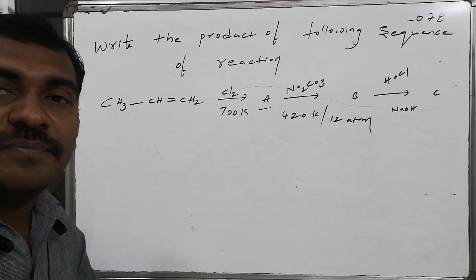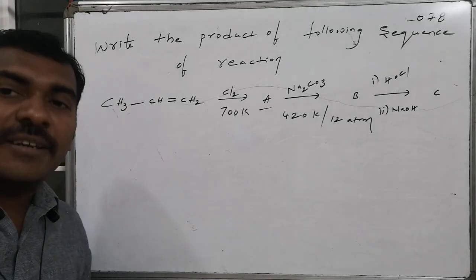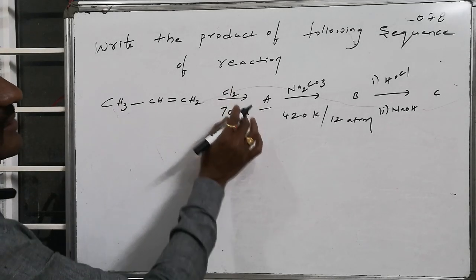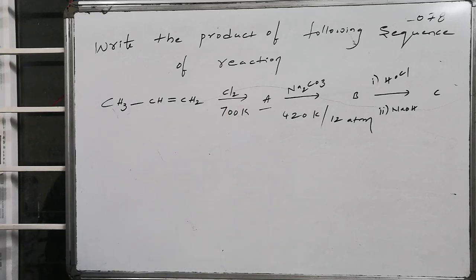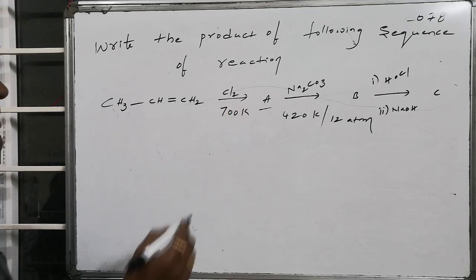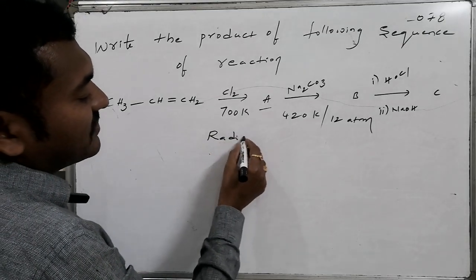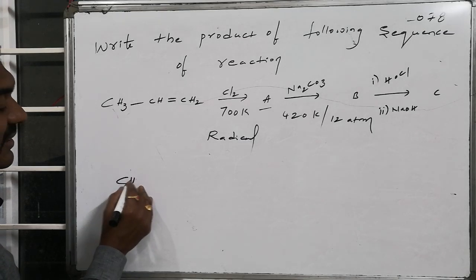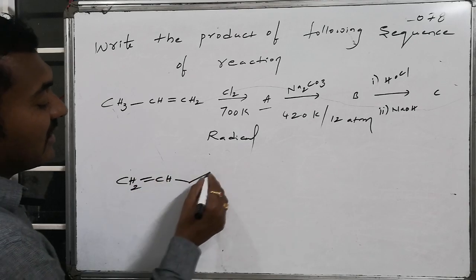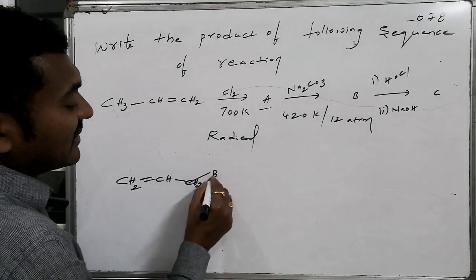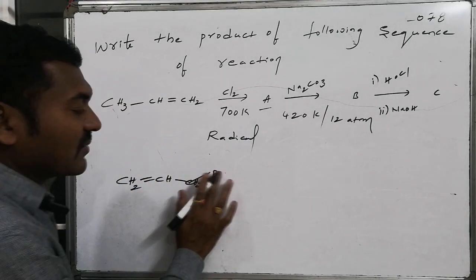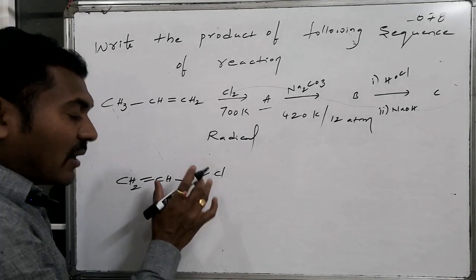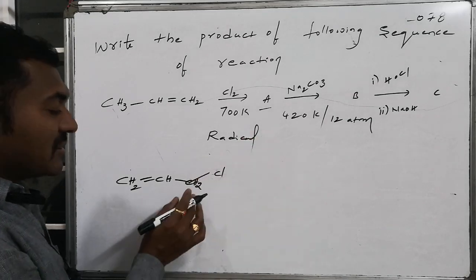Let us look at the reaction details and mechanisms involved. Chlorine at 700 Kelvin — a higher temperature — means this reaction becomes a radical reaction. As a result, the allylic position is substituted, leading to CH₂Cl (allylic chloride) formation. This allylic chloride is very reactive because...